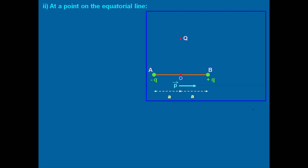To do the derivation, let us make some adjustments in the diagram. We will join the lines A to Q and B to Q, and mark the angle between them as θ. The distance of the point Q from the midpoint will be x. Near point Q, there are two charges: −q located at A and +q located at B. This means at point Q, there will be two electric fields acting — one is Ea and another is Eb.